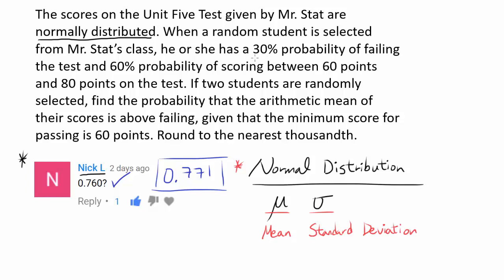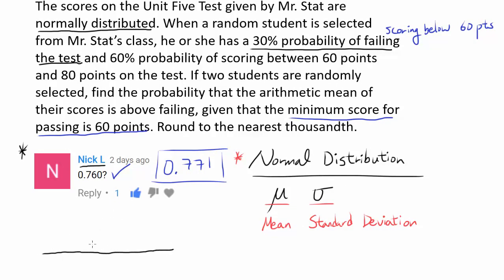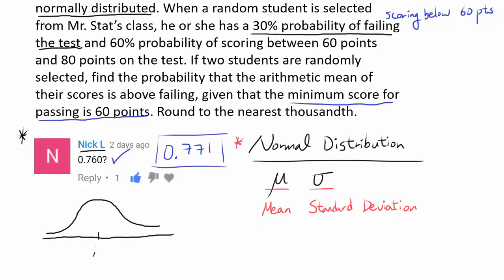The question tells us that when a random student is selected, there is a 30% probability of failing the test. The minimum score for passing is 60 points, so there is a 30% probability of scoring below 60. One way of visualizing that is to think of a normal bell curve. We know the area to the left of 60 — the probability of scoring below 60 — is 0.3. In continuous probability distributions, area and probability are the same thing.